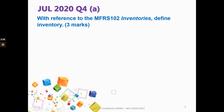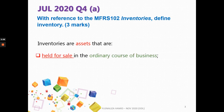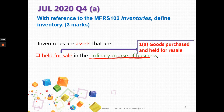Let's move to the requirements. With reference to MFRS 102 Inventories, you are asked to define inventory — that is worth 3 marks. Inventories are assets held for sale in the ordinary course of business. The phrase 'ordinary course of business' means in the normal course of business activities — for example, when you buy goods from your supplier and resell them to your customer. Finished goods purchased from a supplier and resold to generate profit are considered held for sale.